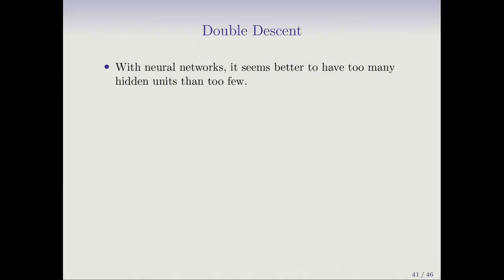The last topic we're going to discuss is a pretty hot topic today, and it's arisen in the last few years. It goes by the name of double descent. Just to set the stage: with neural networks, it seems that it's better to have too many hidden units than too few. Likewise, more hidden layers seem better than few.